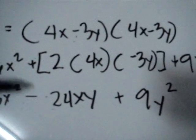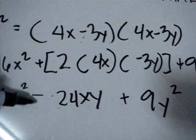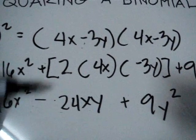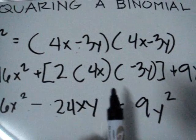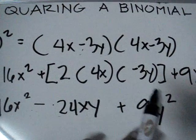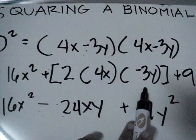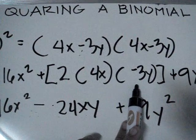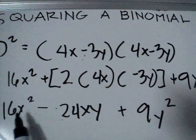We use a subtraction sign here because when you multiply a positive and a negative integer, the result is negative.